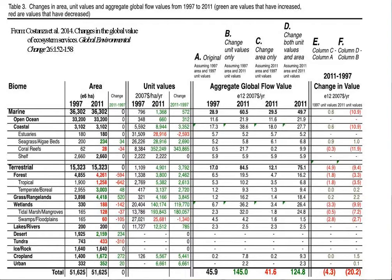We can estimate total values by multiplying areas times unit values in several ways. The first column uses the original 1997 unit values and 1997 areas. The second column updates unit values while keeping the area the same, giving a total of $45.9 trillion in 2007 dollars — adjusted for inflation from 1994 dollars — which goes up to $145 trillion a year with updated unit values. If we only change the area, that number goes down from $45.9 to $41.6 trillion dollars, meaning land use changes decreased the value of ecosystem services by about $4.3 trillion per year.